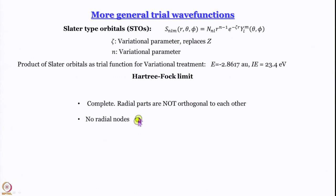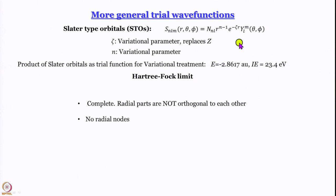Since the polynomial is not present here, the Slater-type orbitals are not orthogonal to each other — we must remember we are not working with orthogonal functions. Also, there is no radial node, again because there is no polynomial. The function equals zero only at infinity, nowhere else. However, you can have angular nodes because the angular part is present, and there is no guarantee that the angular part will not equal zero at some value of theta or phi. These are close to hydrogen atom wave functions but not quite, and they include variational parameters.